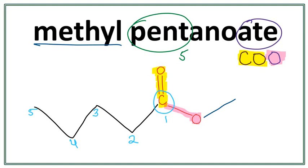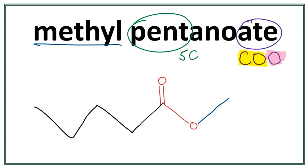Okay, so since we're drawing a line structure, we really don't need to draw this carbon here. So we're going to get rid of the numbers and this carbon here. So this is the structure for methyl pentanoate.